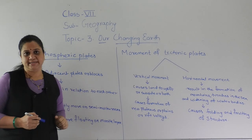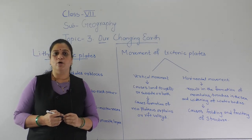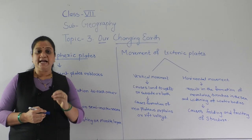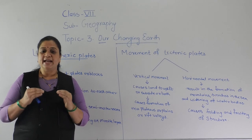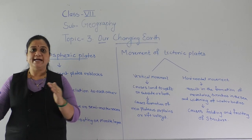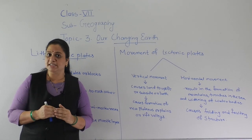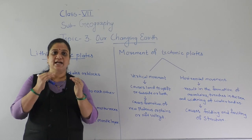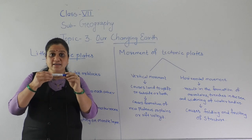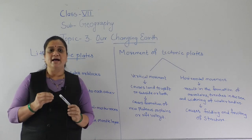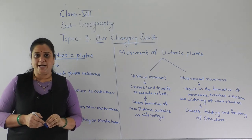The first topic is lithospheric plates. The outermost layer of the earth crust is made up of separate but adjacent plates of the lithosphere. There are different adjacent plates or blocks out of which the earth crust is made up. We cannot see the cracks or the blocks separately, but under the earth crust there are different blocks of which the earth crust is composed.